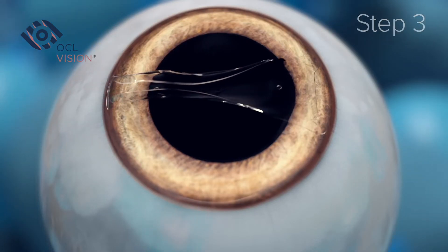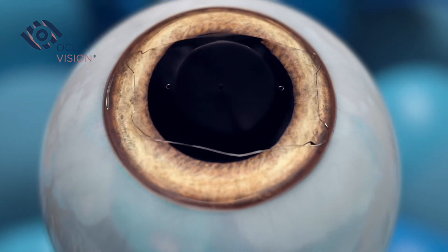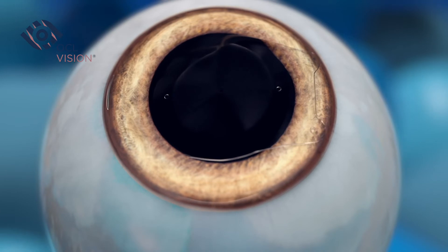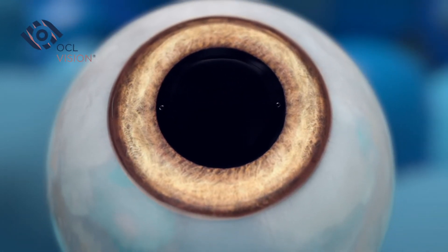Step three: once the EvoICL lens is inserted, the doctor will make any necessary adjustments to ensure its proper positioning in the eye, securely placing it behind the iris, the colored part of the eye, and in front of the natural crystalline lens.